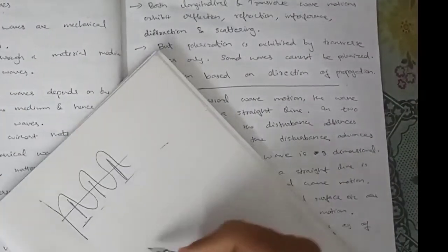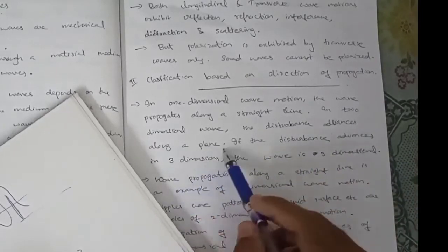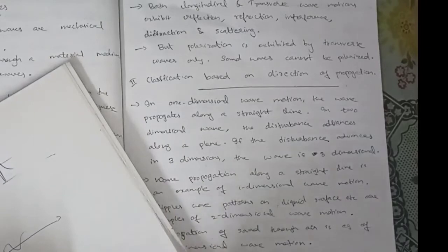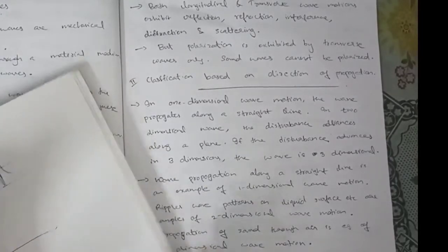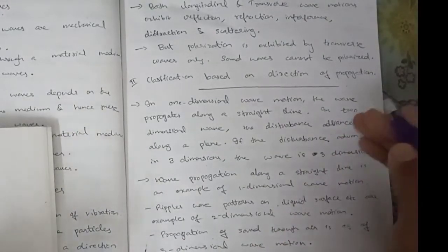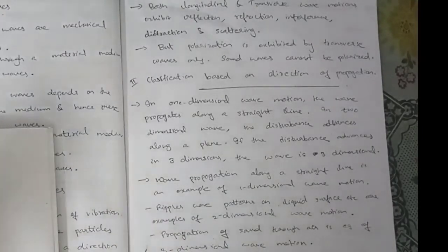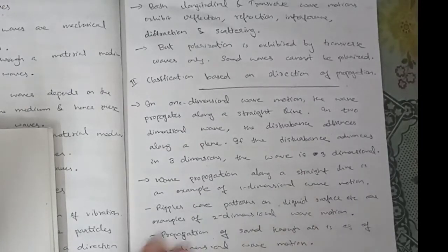Waves can also be classified by dimension. A 1-dimensional wave propagates along a straight line. A 2-dimensional wave has the disturbance advancing in a plane, like the x-y plane. For example, ripples on a liquid surface are a 2-dimensional wave pattern.